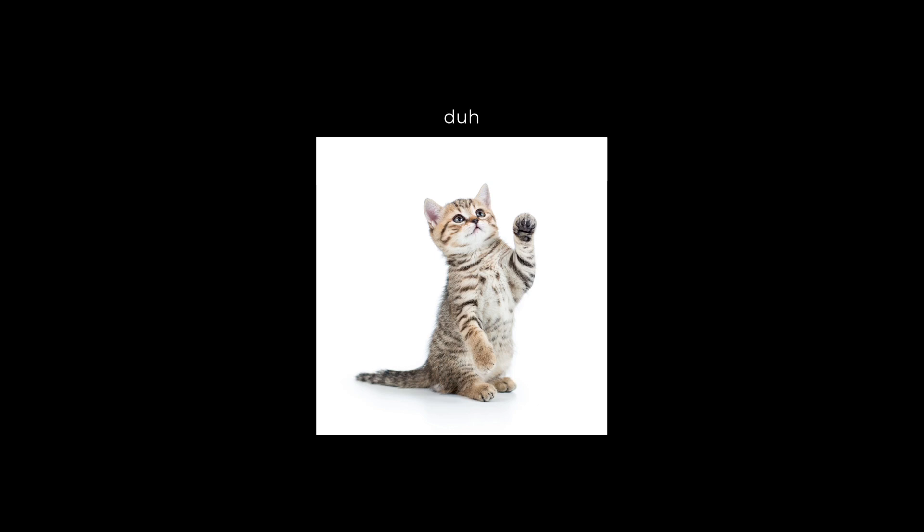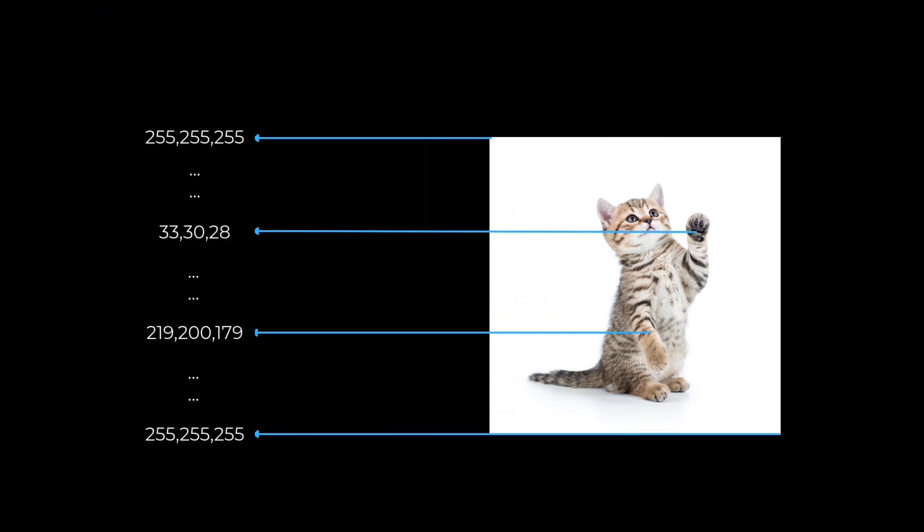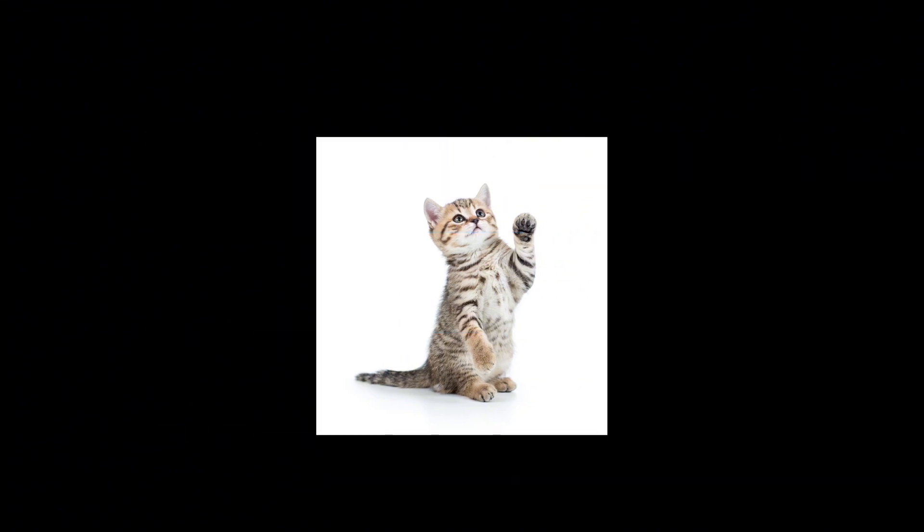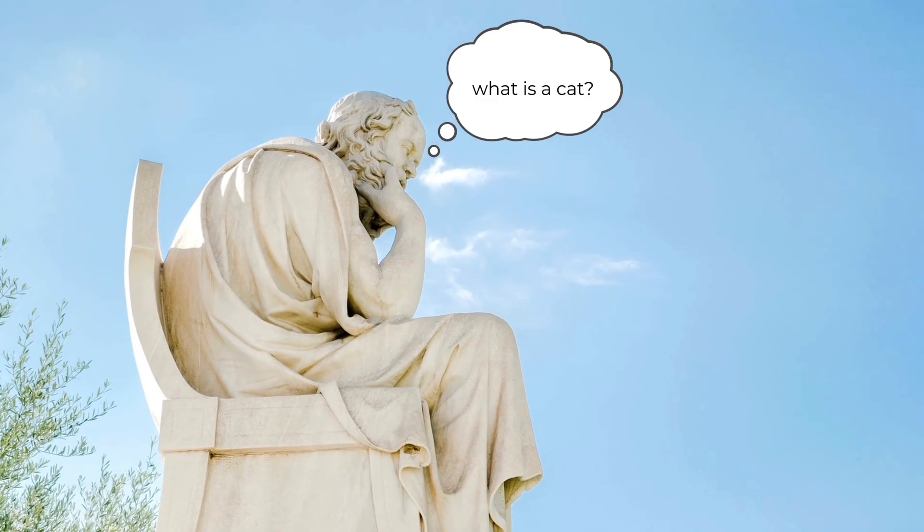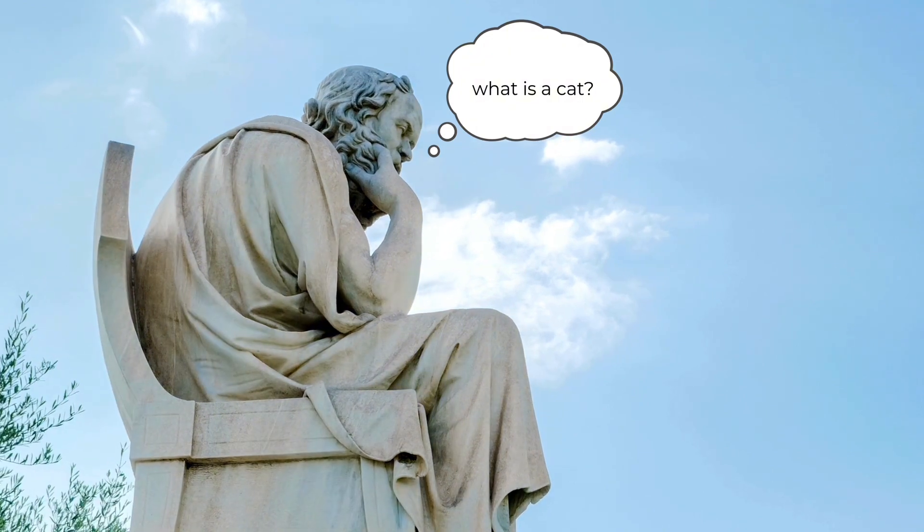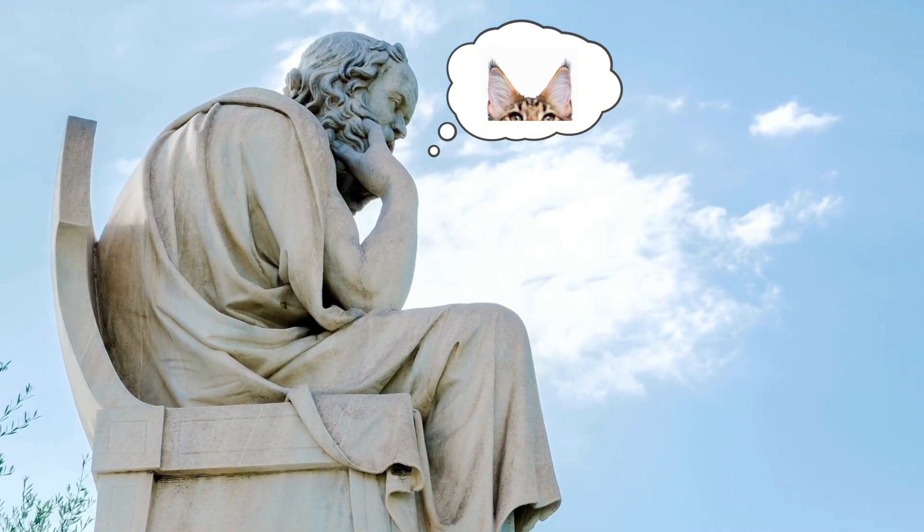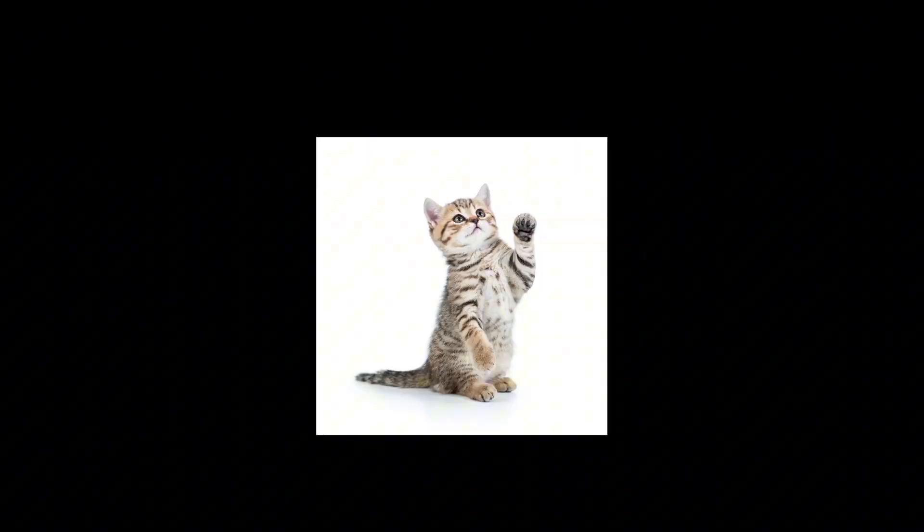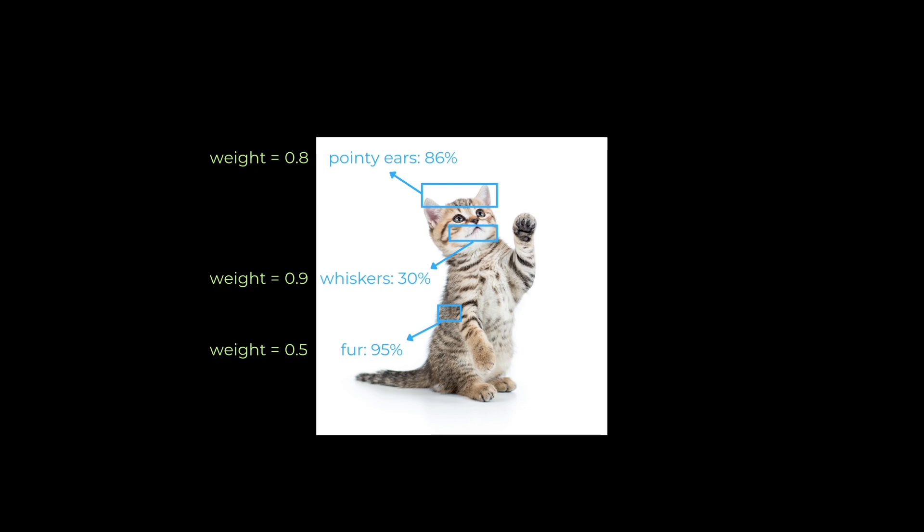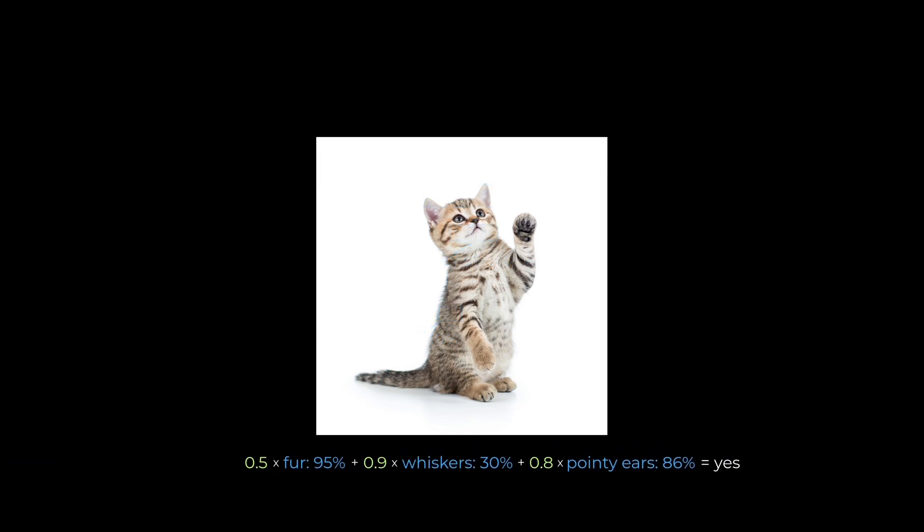While we might look at this image and see that it's obviously a cat, a computer actually sees one million numerical values, one for each pixel. To determine whether an image is a cat or not, it needs to understand the patterns that make a cat a cat. How might a human tackle this problem of identifying a cat? Well, we know that cats have whiskers, they're furry, they have pointy ears, and so on. A machine might tackle this problem as a set of logistic regression problems. It looks at an image and asks, are there whiskers? Is there fur? Are there pointy ears? And it might also assign levels of importance to each feature. For example, it might assign a greater weight to whiskers than fur, because all cats have whiskers, but not every cat has fur. Finally, it might conclude that based on the values of all these features, yes, this is a cat.